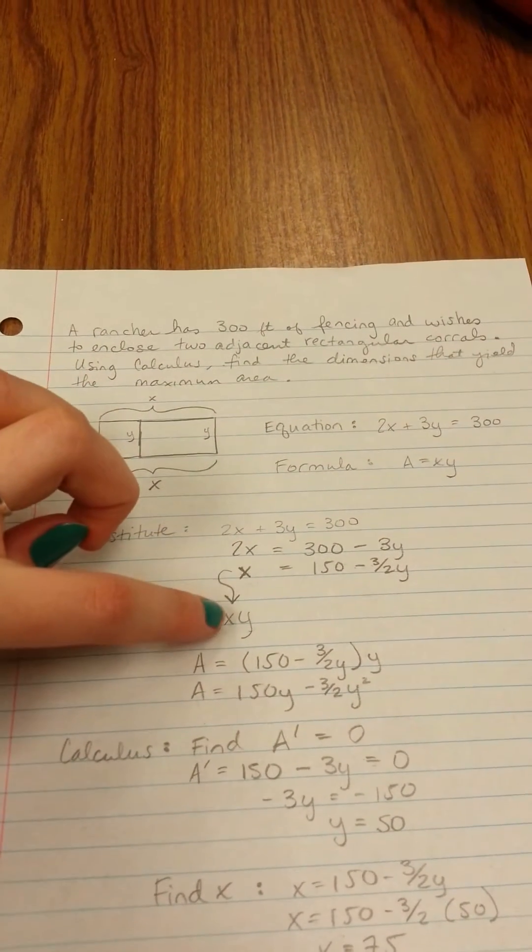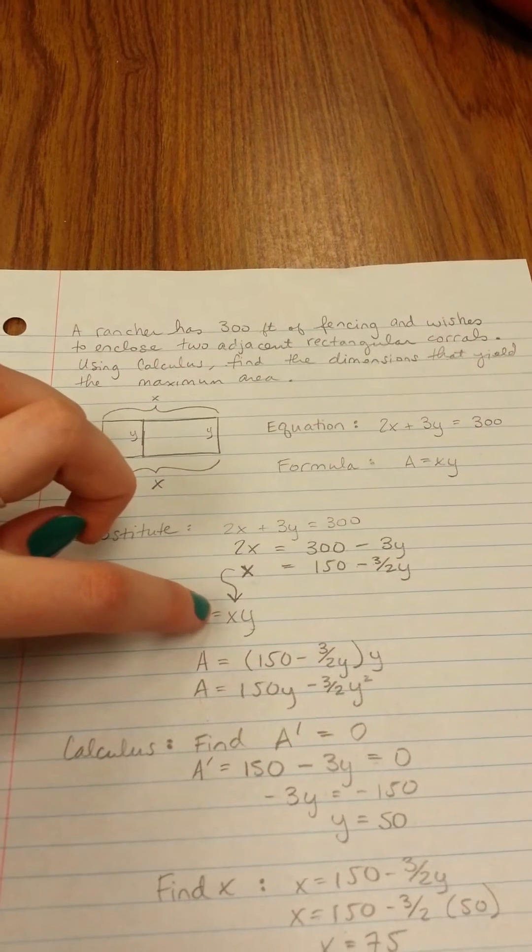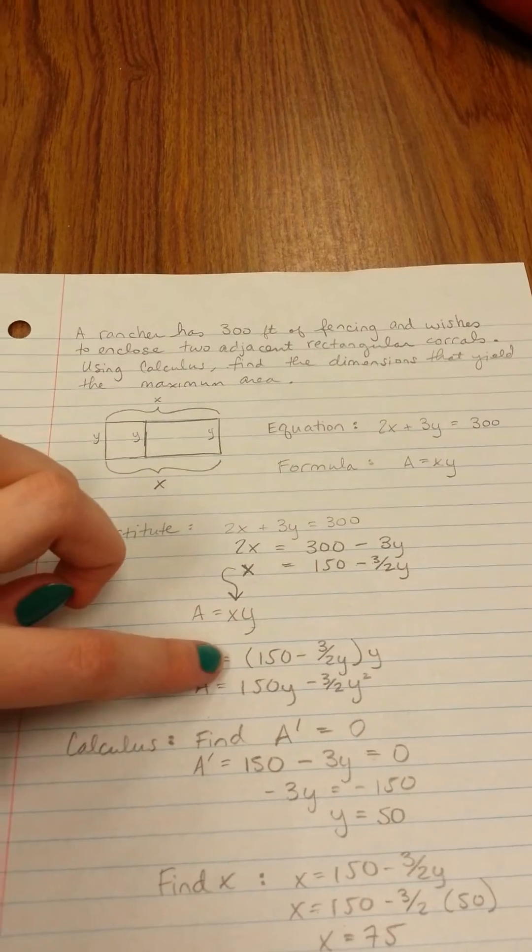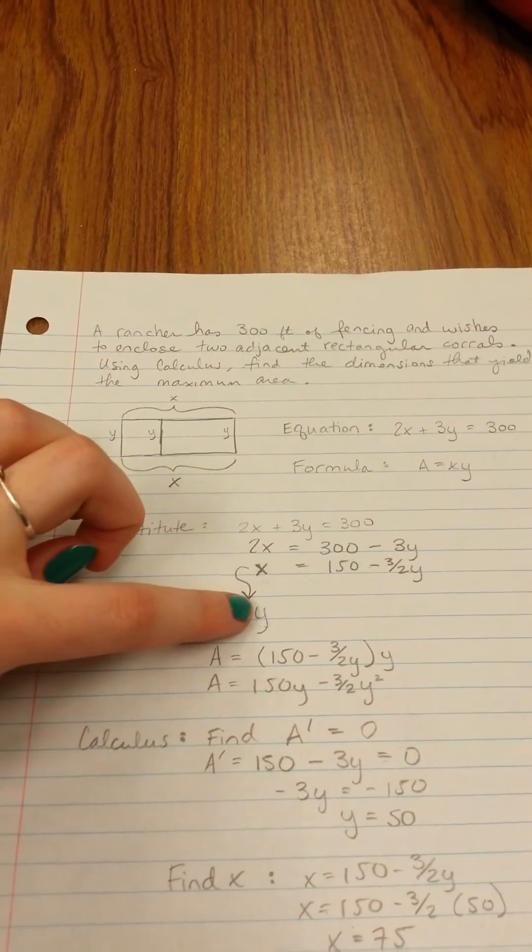Now we're going to plug the information that we found for X into our equation for area. When we do that, we get A equals 150 minus three halves Y, and we multiply that by the Y that comes from here.